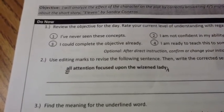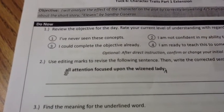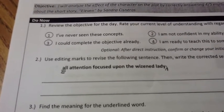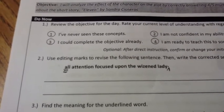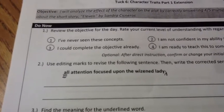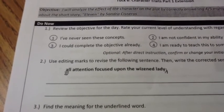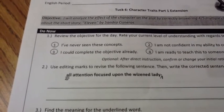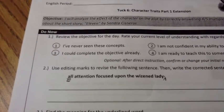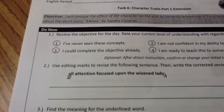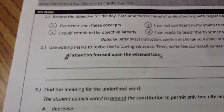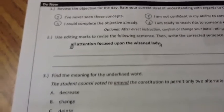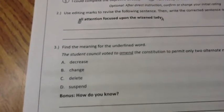Now you can see the sentence with the editing marks that need to be corrected. We need to capitalize 'All' because it's at the beginning of a sentence. We also need to add a period at the end to signify that it's the end of the sentence. These are the only two corrections that need to be made today. Please make sure you write the complete sentence with the corrections on the lines below. Go ahead and pause if you need to, or continue on to number three if you already did.